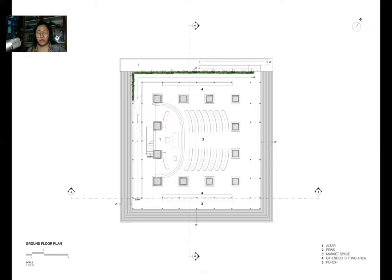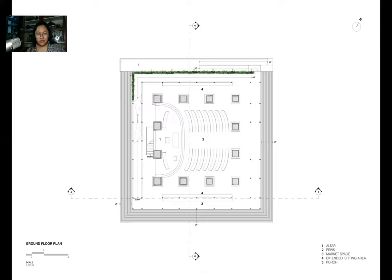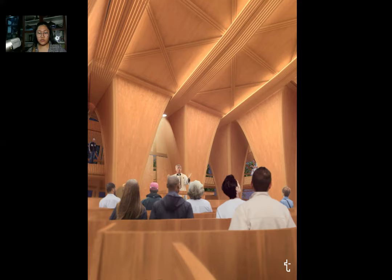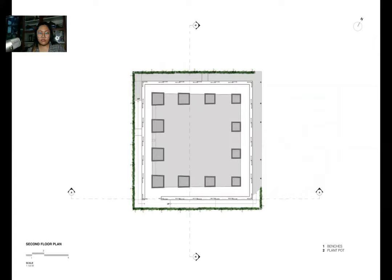I want you to walk through these floor plans, putting yourself in the position of a churchgoer. Whether you're able or disabled, you can access this church. Inside, you're greeted by beautiful arches where the water collects, creating this grandiose, expansive space because of the huge span in the center. On the sides are trellising plants, and while you're in the church listening to the priest, seated on the pews, underneath there are growing beds of mungo. Part of the interiority is to seamlessly integrate these plants into the architecture — local food readily consumed in five to seven days.